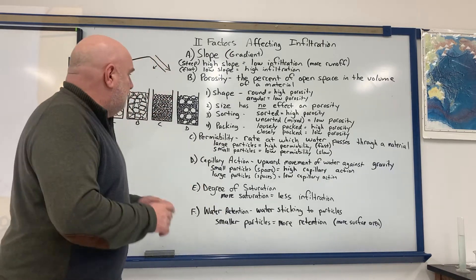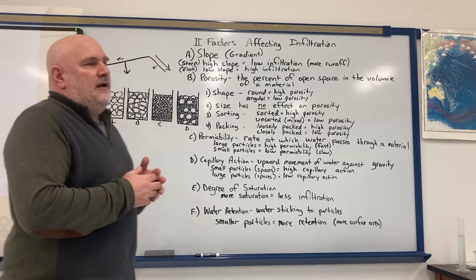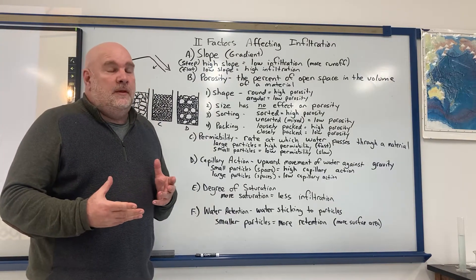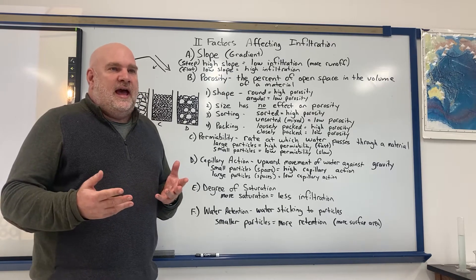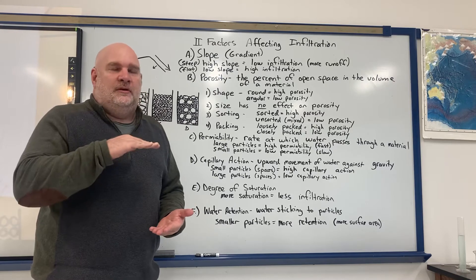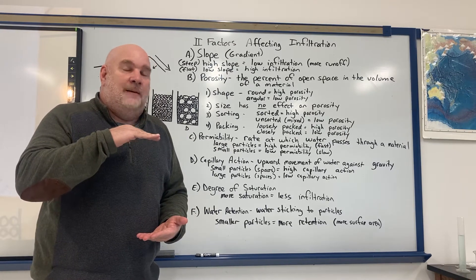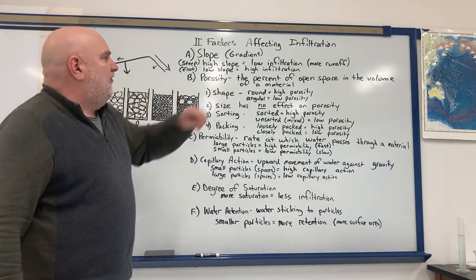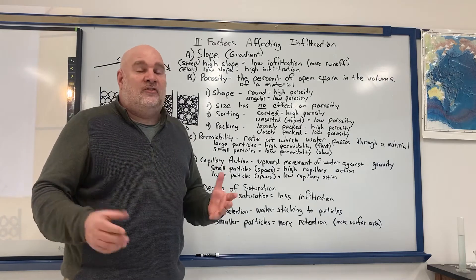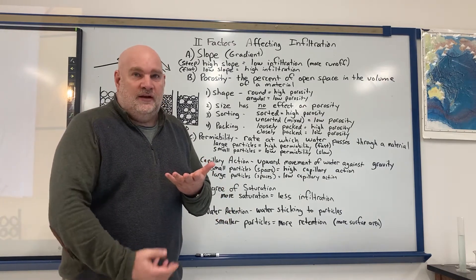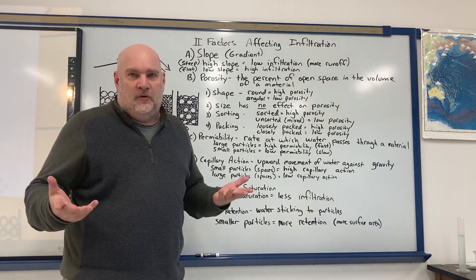Next is porosity. There has to be a place in the ground for water to go. Porosity is how much empty space exists in the ground. For example, if 100 mL of dirt contains 30 mL of empty space between particles, that's 30% porosity. The bigger the porosity, the more empty space there is and the more water can soak in; very low porosity means little water can infiltrate.